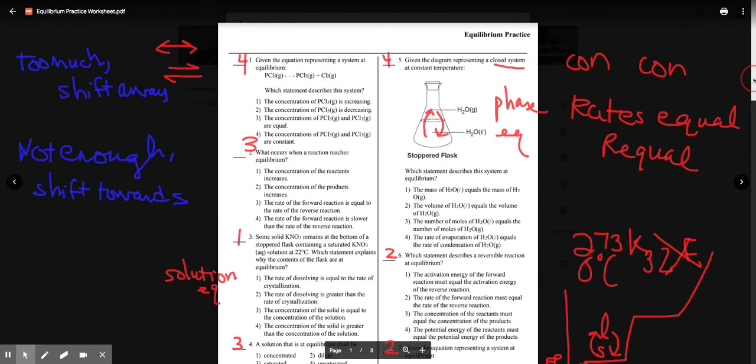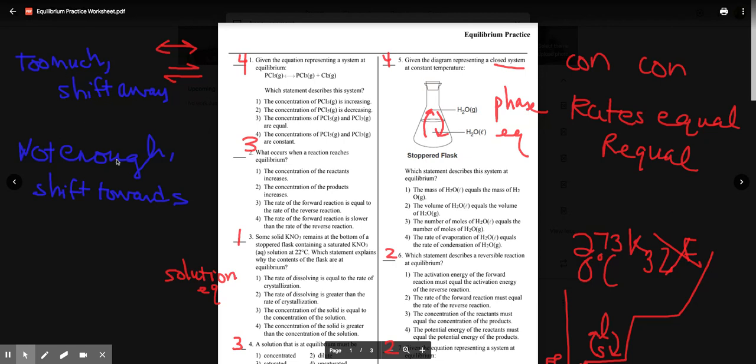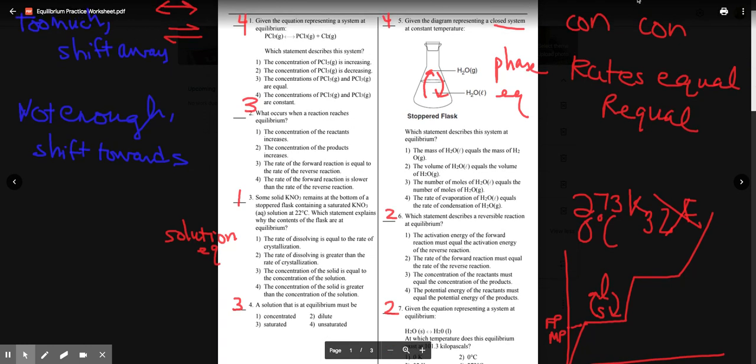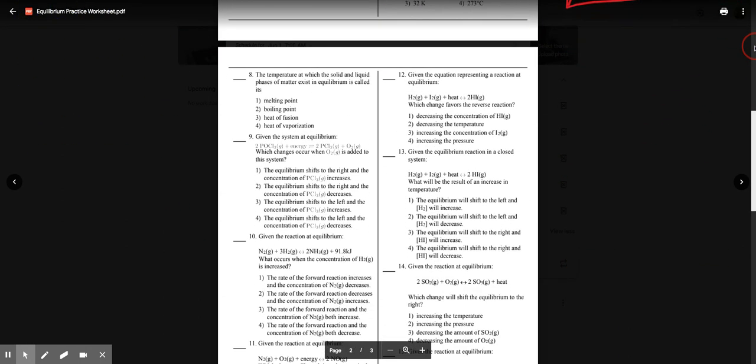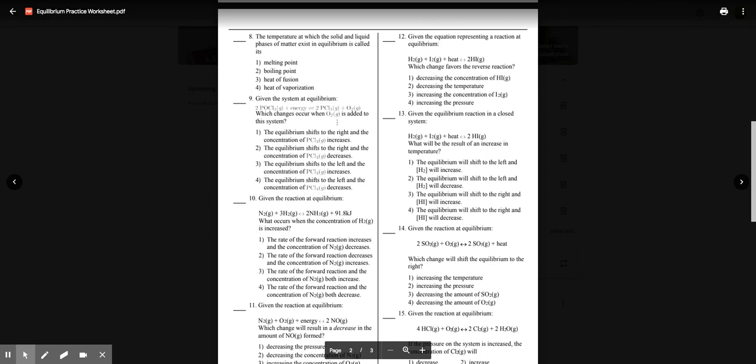Let's continue. Don't forget. Too much shift away, not enough shift towards, constant or equal. The temperature, which is solid and liquid, phases of matter exist at equilibrium. Solid and liquid. We just talked about that. That's the melting point. It's at equilibrium.